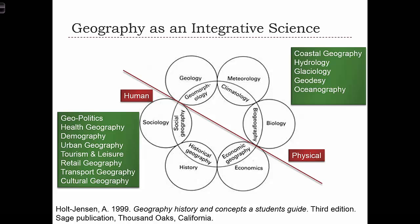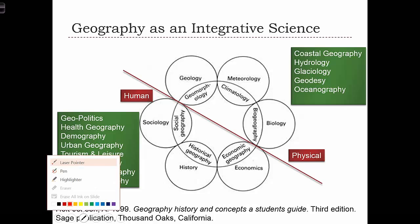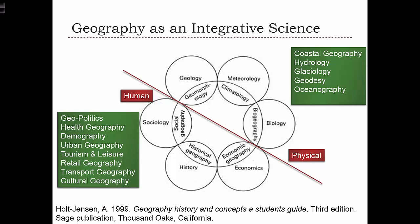Geography is a very nebulous field. A traditional way to think of geography is that it's this integrative science. What this plot is showing here is a split between different scientific disciplines. Over here we have the physical sciences, and down below we have the human and social sciences.